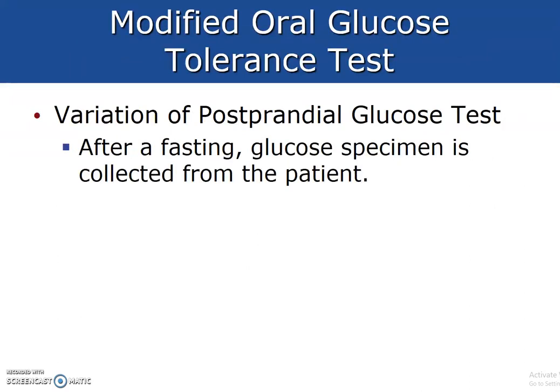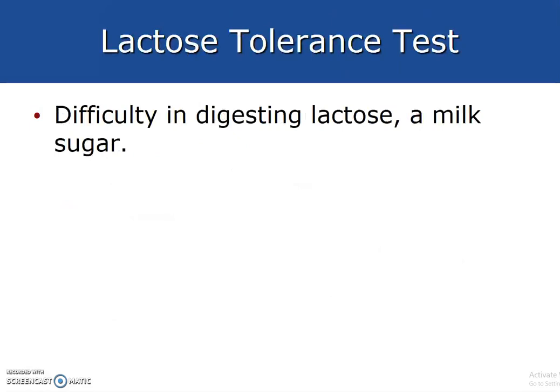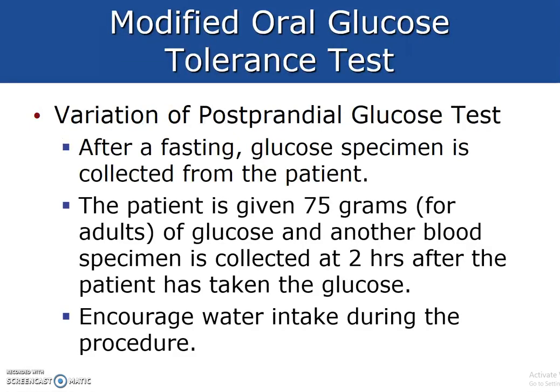The modified oral glucose tolerance test: instead of having the patient eat a meal, the patient is given a 75 gram load of glucose under a two-hour glucose tolerance test. Blood is collected two hours after the patient has taken the glucose drink. There are various glucose tolerance tests — one-hour, two-hour, and three-hour — which will be discussed further in class.